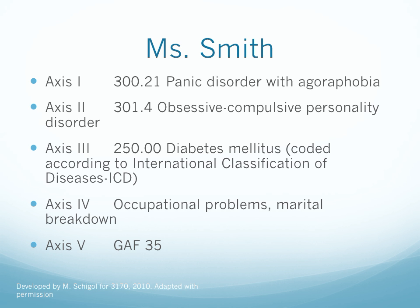Looking at the example of Ms. Smith and how the multi-axial system of diagnosing comes into play, you'll see there are five axes listed — axis 1 through to axis 5. This is the way diagnoses would be written using the DSM-IV. The DSM-5 has proposed a different approach to listing diagnoses and the level of functionality for the client. Your textbook still references the DSM-IV because the DSM-5 is fairly fresh, just released in May of this year, and hasn't been updated in the textbook yet. So we'll continue to explore what the multi-axial system really refers to.